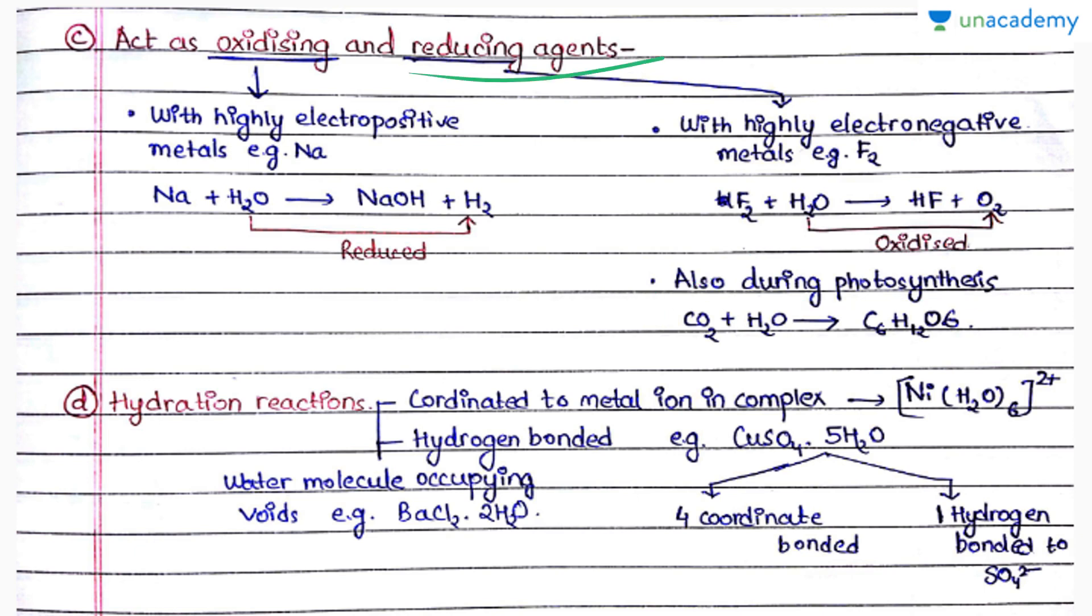Hydration reactions are shown in three forms. Either the water can be linked to the metal ion complex in the coordinated form, for example in this complex ion. Or it can be hydrogen bonded, for example in CuSO4·5H2O, four of these H2O are coordinate bonded, but the fifth water molecule is hydrogen bonded to the SO4 ion. The third way is when water molecules are present in voids, for example in barium chloride 2H2O, these two H2O molecules are present in voids of the structure of BaCl2.